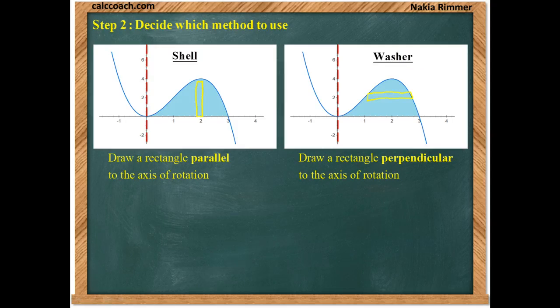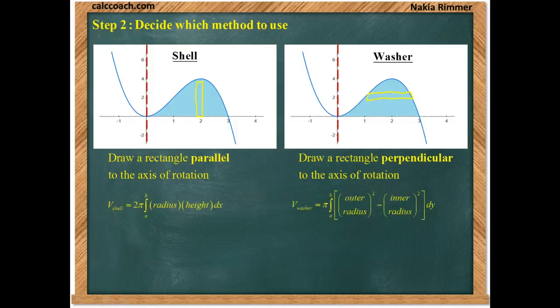So for shell, we have to know the formula for volume: two pi times the integral from a to b, the radius times the height. For washer, we need to know the formula for volume, and it's pi times the integral from a to b of the outer radius squared minus the inner radius squared. Because this is a vertical rectangle, it gets moved from left to right, so it'll be in x in this particular instance. Because this is a horizontal rectangle, it'll be moved upwards in order to accumulate the volume, and so washer would have to be in y.